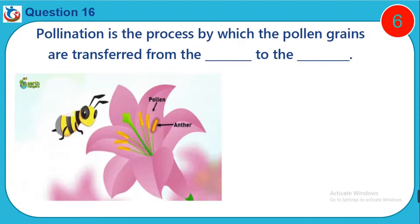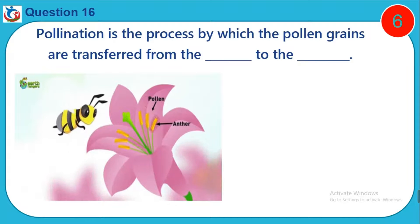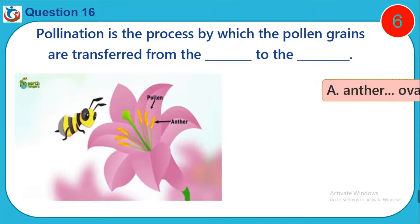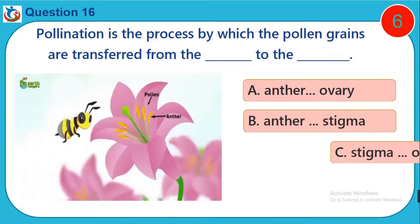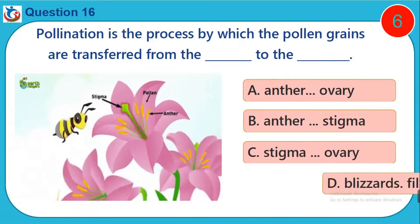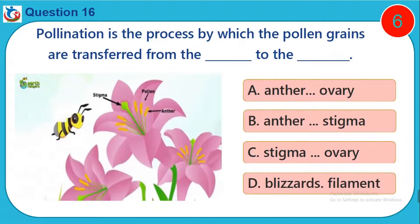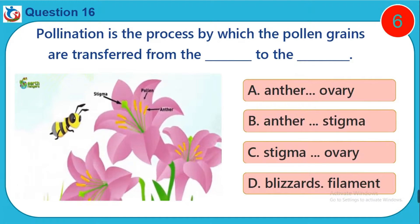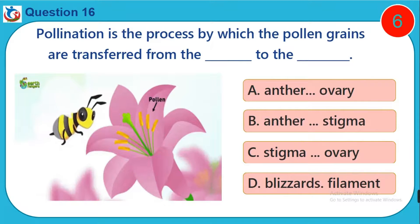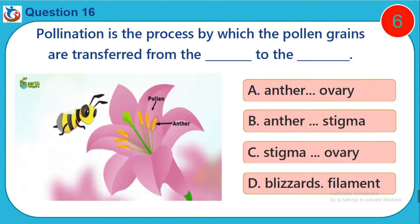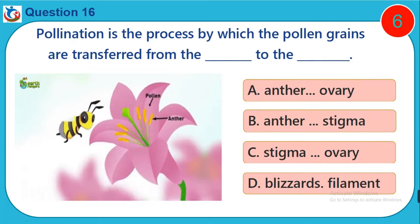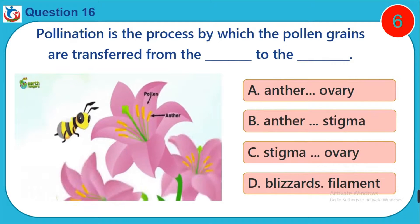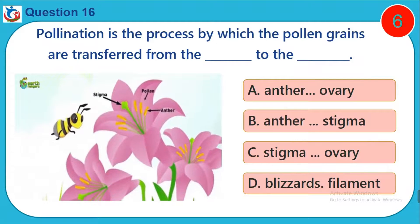Question 16. Pollination is the process by which the pollen grains are transferred from the ___ to the ___. A. Anther to ovary. B. Anther to stigma. C. Stigma to ovary. D. Stamen to filament.